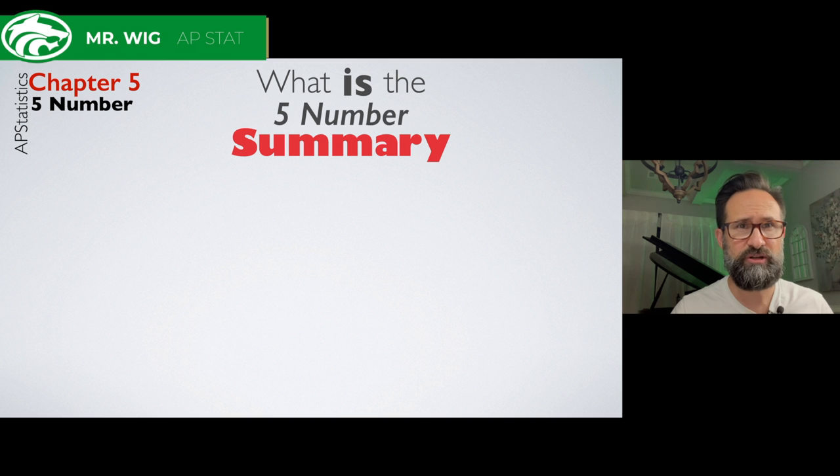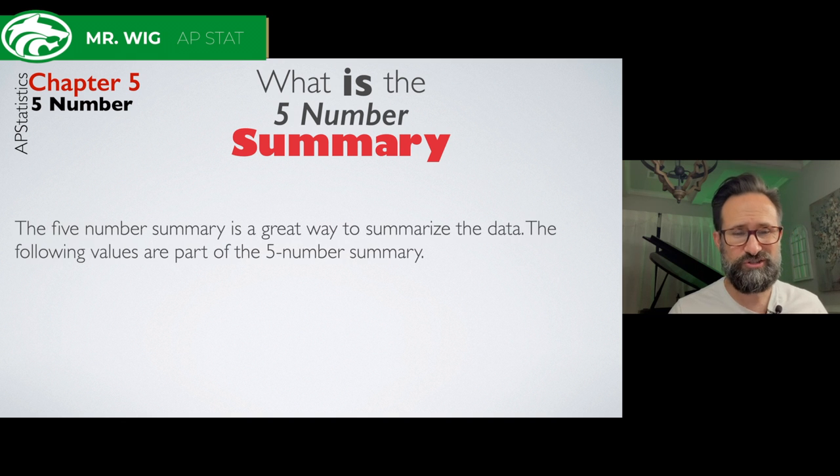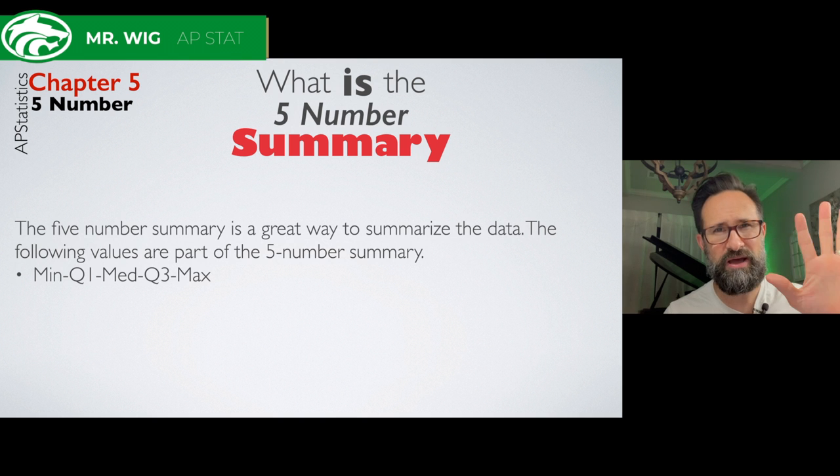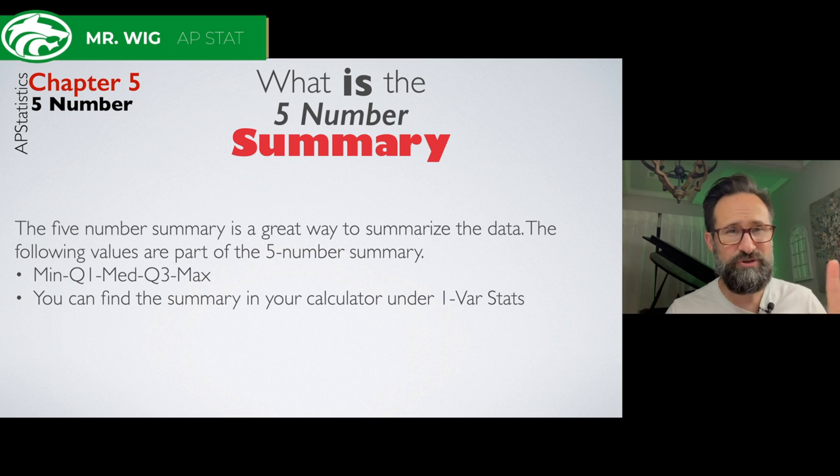We have mentioned the five number summary, which is one of the easiest things to get if you have your TI-84 calculator. You can just go in one variable stats. At the bottom of that you get your five number summary. Just to kind of review, the five number summary consists of a few things. Number one, it's the minimum, the Q1, the first quartile, 25th percentile. It's the median value, which is also known as Q2. It's the third quartile or the 75th percentile and the maximum value, which essentially is the 100th percentile. The easiest way to get this is in your calculator.